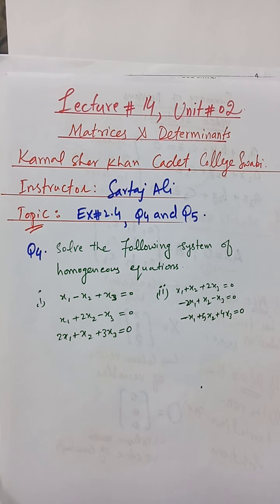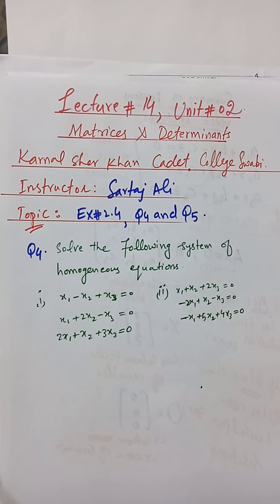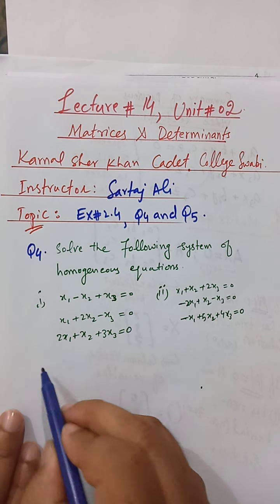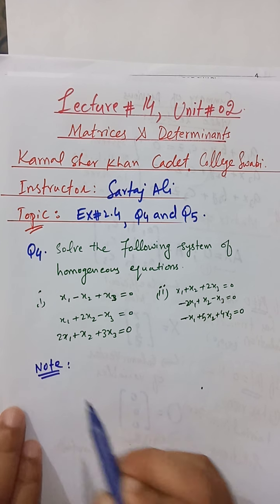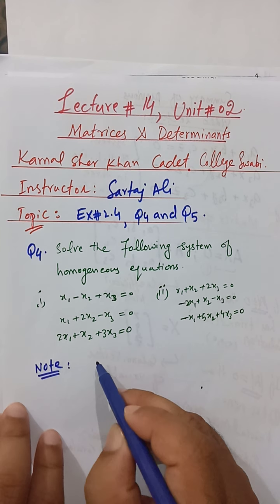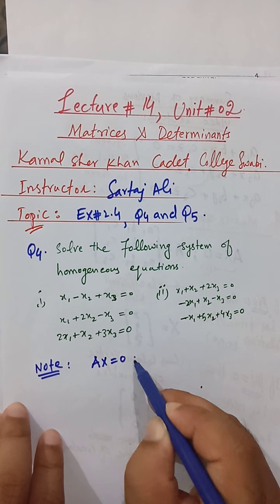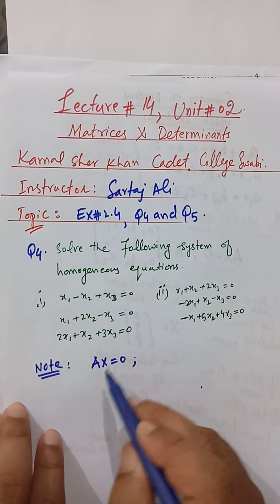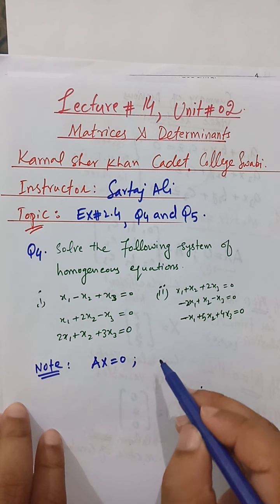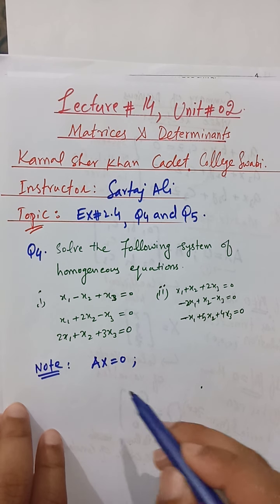You know that we discussed in detail how we can find out the solutions of the system of non-homogeneous linear equations in three variables. Now in question four and five, there is a system of homogeneous linear equations in three variables. Note: you must remember this from previous videos — if we have a system of homogeneous linear equations in three variables, you can convert that into the matrix form Ax = O.